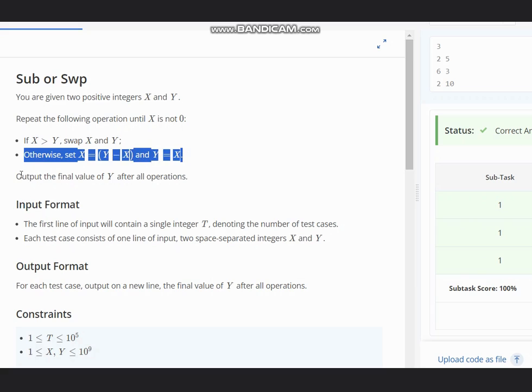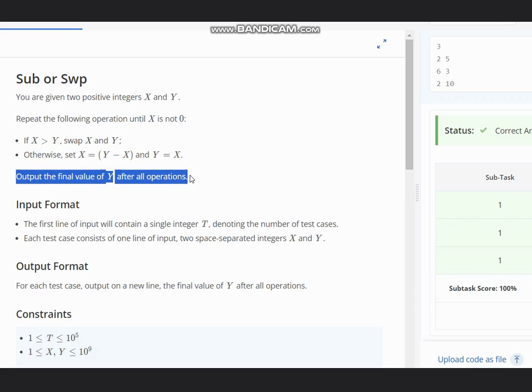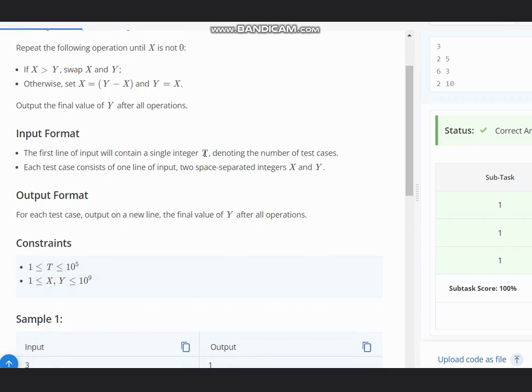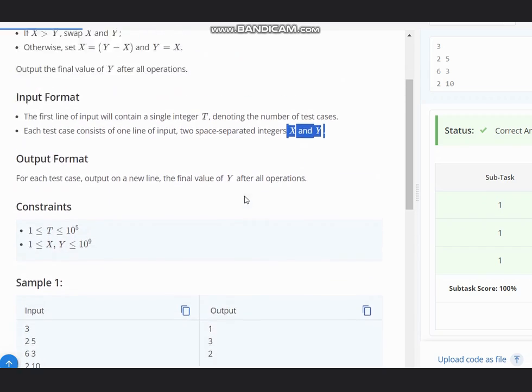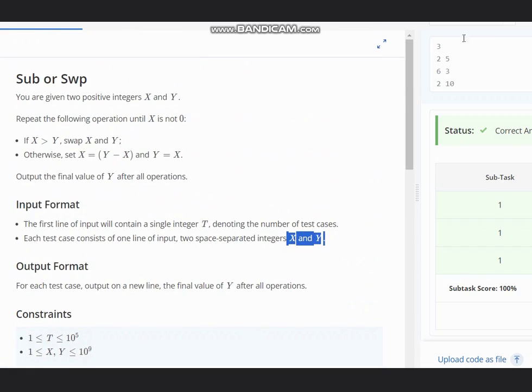Output the final value of Y after all operations. We take T, the number of test cases, with space-separated integers X and Y. First, let's take X equal to 2 and Y equal to 5.